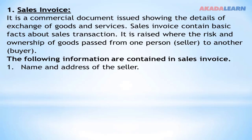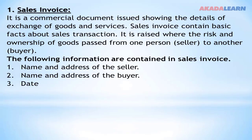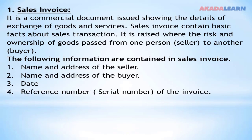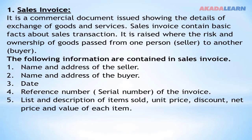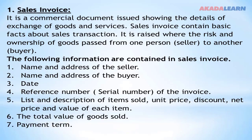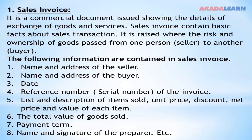The contents of a sales invoice include: name and address of the seller, name and address of the buyer, date of transaction, reference number or serial number of the invoice — each invoice is expected to have a serial number. Then we have a list and description of items sold, unit price, discount, net price, and value of each item, the total value of goods sold, payment terms — whether part payment or full payment — and the name and signature of the preparer, and more.